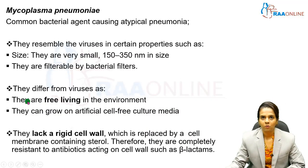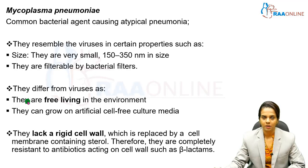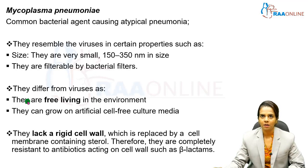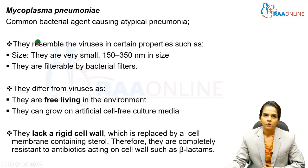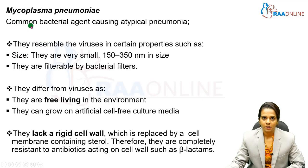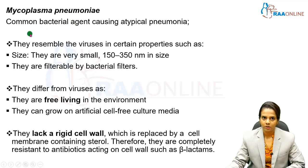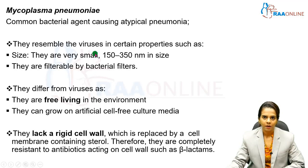In this lecture, we are going to see about the main causative agents causing atypical pneumonia — the main bacterial causative agents. First, let us see about Mycoplasma pneumonia. This is the most common bacterial agent causing atypical pneumonia.